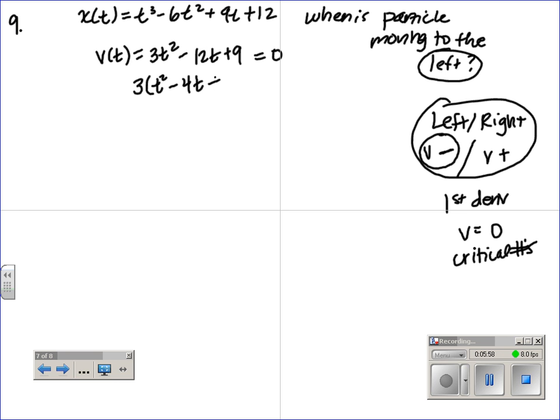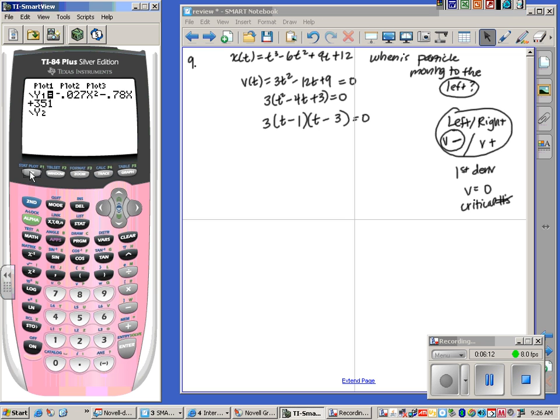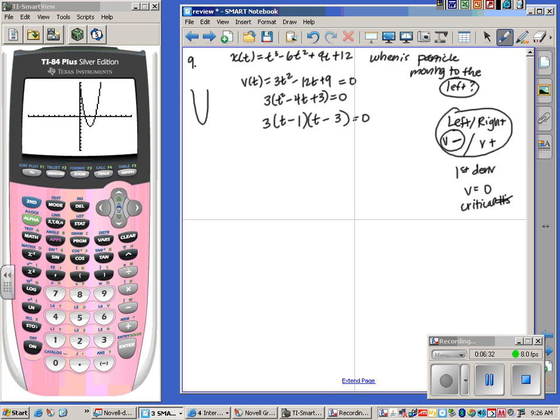So we need the velocity, which we get by taking the derivative, 3t squared minus 12t plus 9. We set it equal to zero. GCF here makes life easier. 3t squared minus 4t plus 3. Now we need two things that multiply to give me 3, so that's 3 and 1. But we need a negative four, so they're both negative.